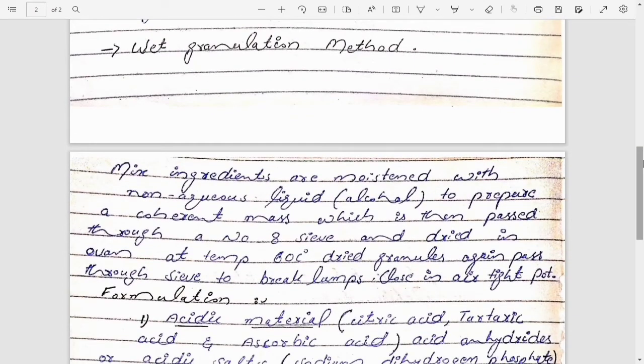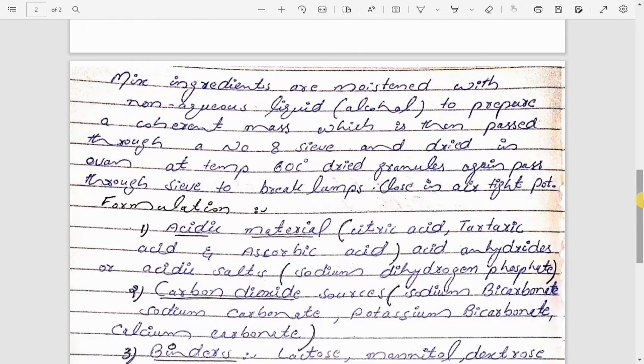The next one is wet granulation method. As the name indicates wet, here we need to add an external granulating agent. We commonly use isopropyl alcohol. First we will mix all the ingredients, all the powders like tartaric acid, citric acid